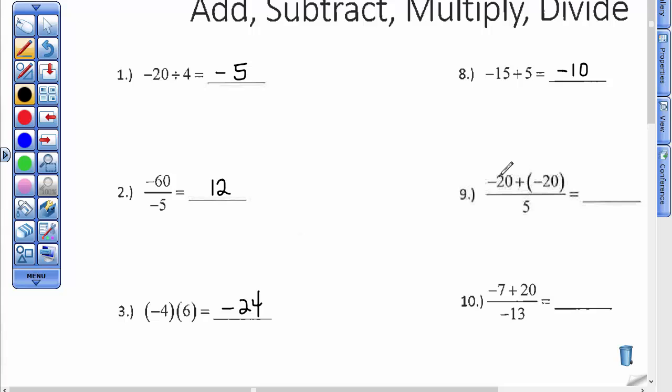And number 9, I need to do what's in the numerator first. It's like this division bar is like saying get this calculated first, so the absolute value is 40. I put the common sign on and now I want to divide that by 5 and a negative divided by a positive is a negative.